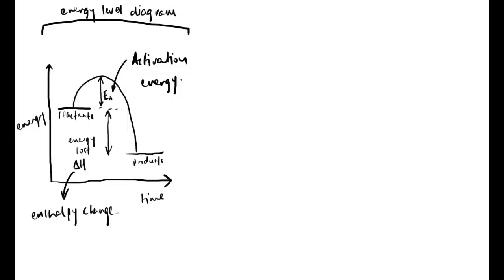We can see this from the energy level diagram. This hump — if you imagine a ball starting at the bottom of this imaginary hill — if we try to push the ball up we have to put energy in to get it to this portion. Once we reach that point it would roll down freely. The energy being put in overcomes the activation energy to get the reaction to the point where it's ready to go, and then the rest of the reaction involves releasing energy. The energy lost is the portion between the reactants and the products.